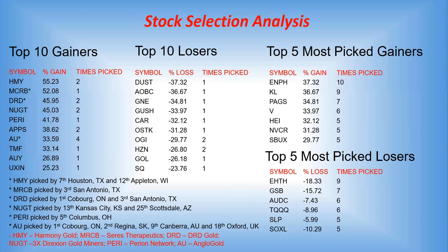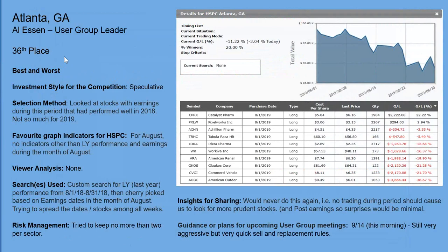Gordon asks why some of the top five aren't on the top 10 list — I put them over here separately, that was the reason. Let's move into the groups. We have L from the Atlanta user group — the best pick was CPRX, Catalyst Pharmaceuticals. We had quite a few pharma stocks picked, and it's interesting that many groups may not have finished in the top 10 but still had some good picks along the way.